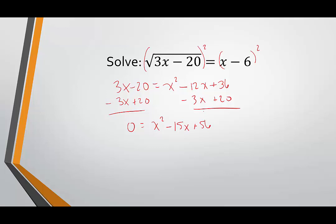We're hoping this is factorable. We're looking for two numbers whose product is 56 and whose sum is negative 15 — that's negative 7 and negative 8. We can use the shortcut since the leading coefficient is 1: (x minus 8)(x minus 7). Setting each factor equal to 0 gives x equals 8 and x equals 7 as the two potential solutions.